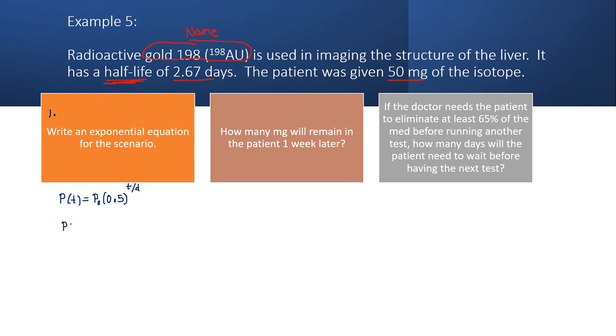So P(t), the population, remains a variable because we can calculate that for any moment in time. P0, the starting amount, the patient was given 50 milligrams, so I'm able to fill that in.